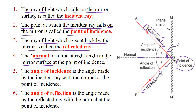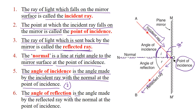The angle of incidence is the angle made by the incident ray with the normal at the point of incidence — इसे I से denote किया जाता है. The angle of reflection is the angle made by the reflected ray with the normal at the point of incidence — इसे R से denote करते हैं.